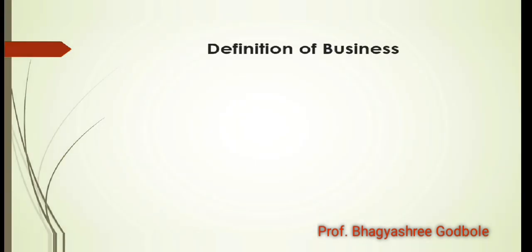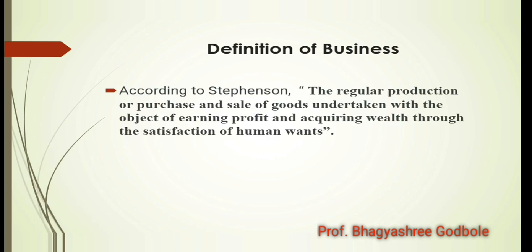Now moving ahead to the definition of business. There are various definitions given in the textbook; you can study whichever you prefer. We will study the definition given by Stephenson. According to Stephenson, business means the regular production or purchase and sale of goods undertaken with the object of earning profit and acquiring wealth through the satisfaction of human wants. Let us try to break this definition. First, it says the regular production or purchase and sale of goods.